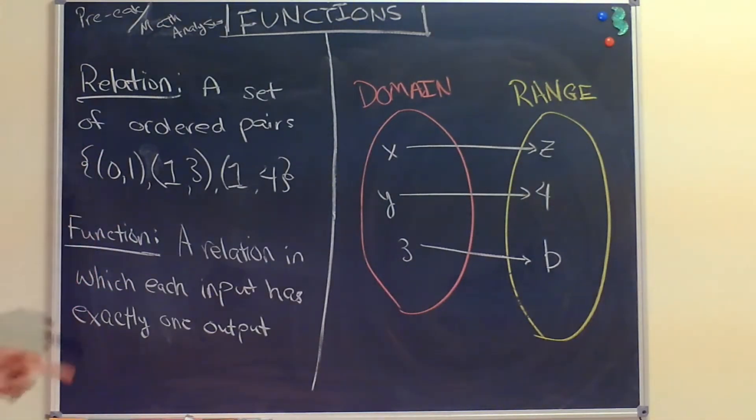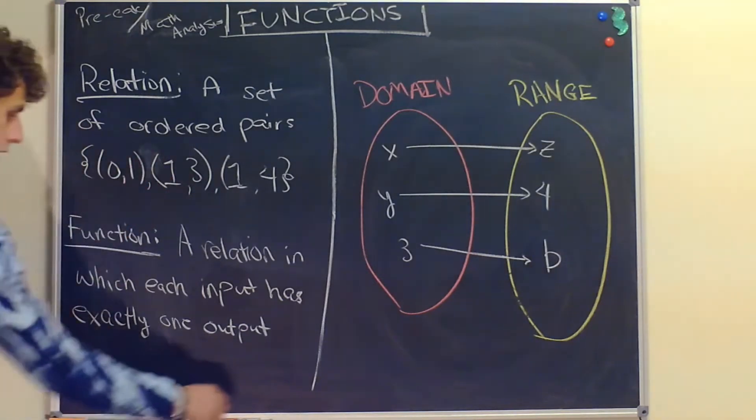First, we need to talk about relations, which are a set of ordered pairs in any particular order. I have an example here where the first pair is (0,1), the second pair is (1,3), and the third pair is (1,4).